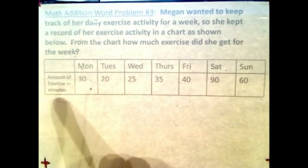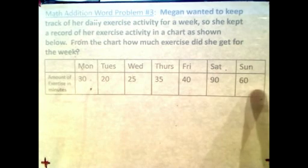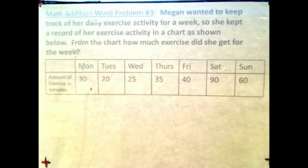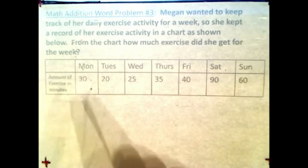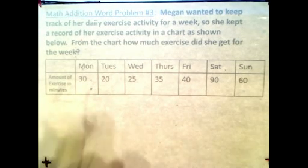Notice it's Monday, Tuesday, Wednesday, Thursday to Sunday, and these are an amount of exercise in minutes. So 30 minutes on Monday, Tuesday is 20 minutes, and so on to Sunday which was 60 minutes. In order to find out how much she got in a whole week, we would have to add individual days up from Monday to Sunday.